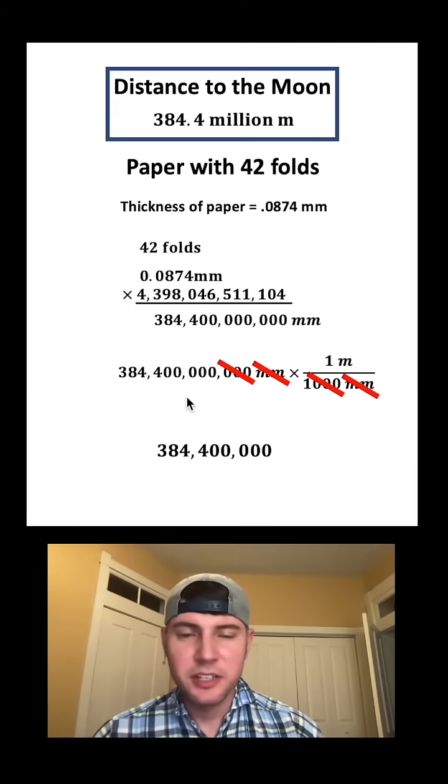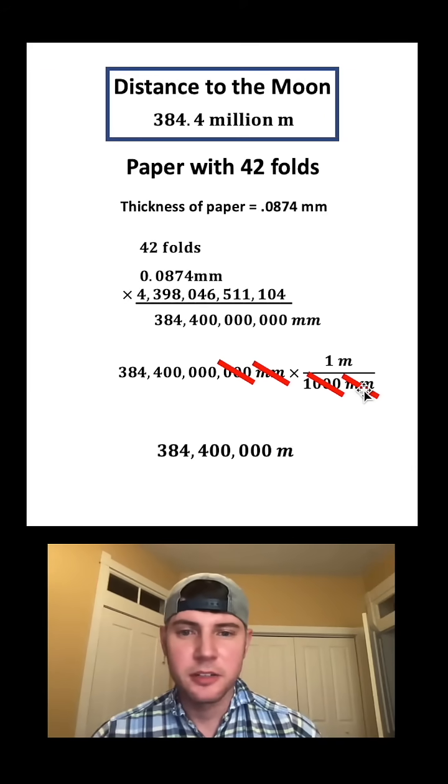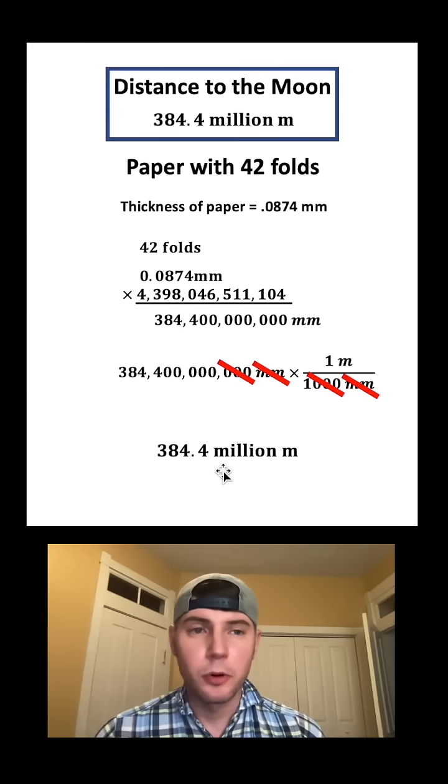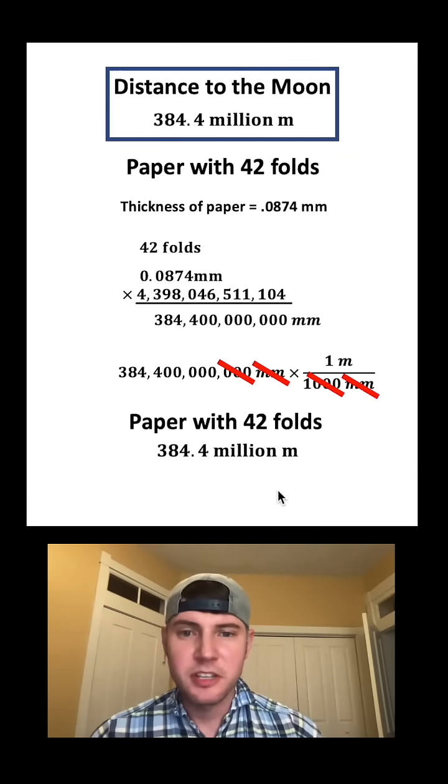Let's bring down the rest of this number and let's bring down meters. This is 384 million 400,000 meters, or in other words, 384.4 million meters. Let's give it a label - this represents a paper with 42 folds - and let's put a box around it.